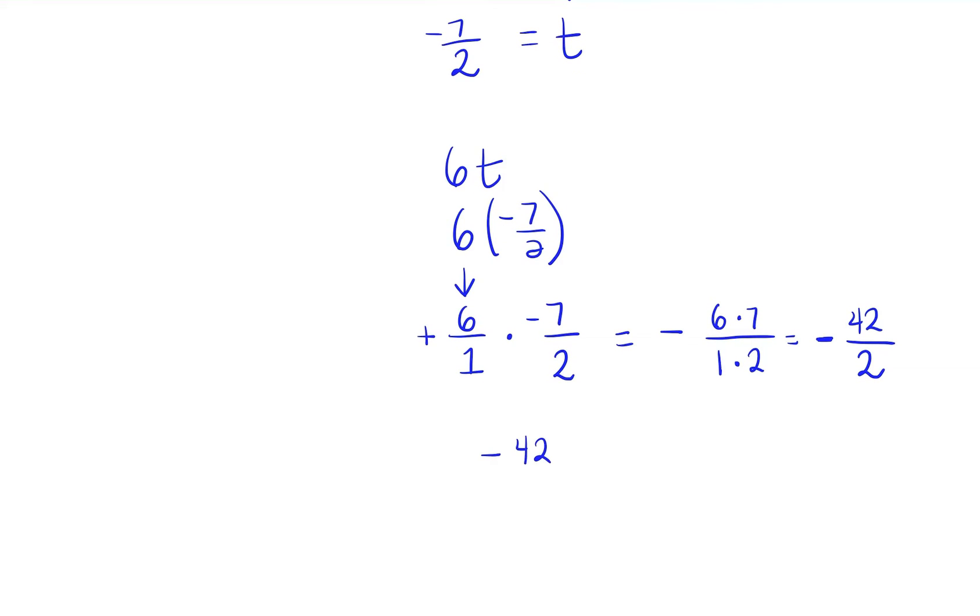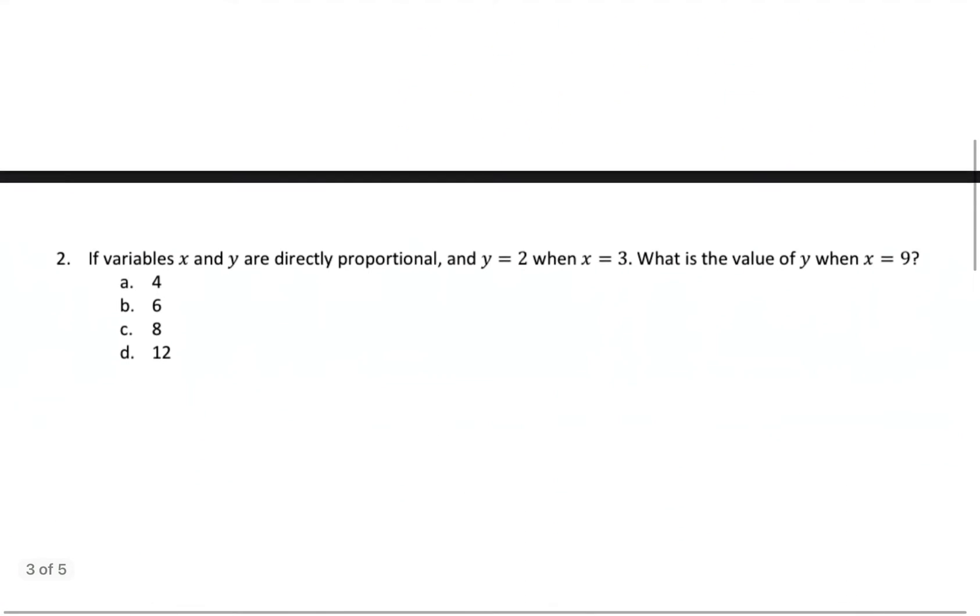Negative 42 over 2. That's the same as saying negative 42 divided by 2. So negative 42 divided by 2 is negative 21. So my answer is 6T is equal to negative 21. All right. So let's go on to our next problem.